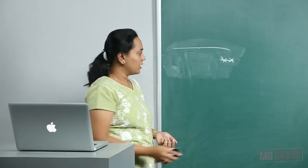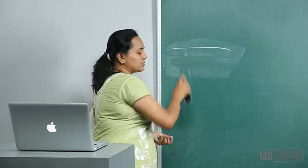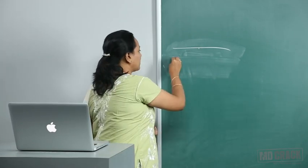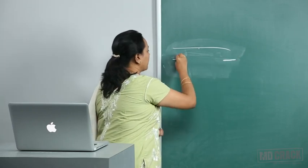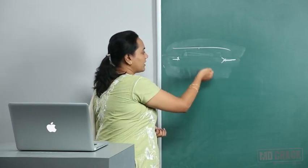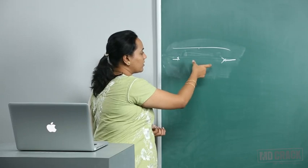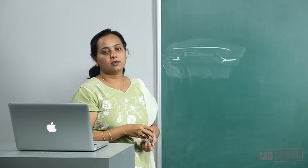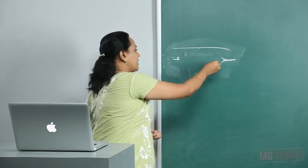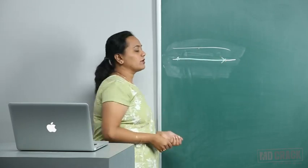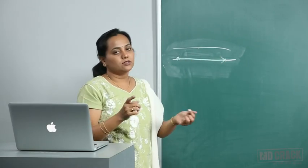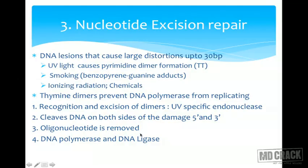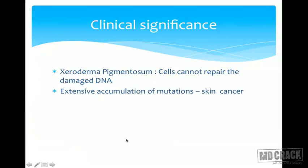In NER, the whole segment — from one cut to the other, along with the pyrimidine dimer or whatever the lesion — is removed as an oligonucleotide. Then DNA polymerase and DNA ligase resynthesize and join the strands. The clinical significance is xeroderma pigmentosum, a condition where cells cannot repair damaged DNA, leading to extensive mutation accumulation.